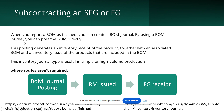This can be done by using a BOM journal. You simply post a BOM journal directly and the raw material will be consumed and the finished good item will be generated in your product receipt. The posting generates an inventory receipt for the finished good product and an inventory issue for the raw materials included in the BOM. This journal type is useful in simple or high volume production where you don't have routes or operations to perform inside your premises — it is performed outside by a subcontractor.